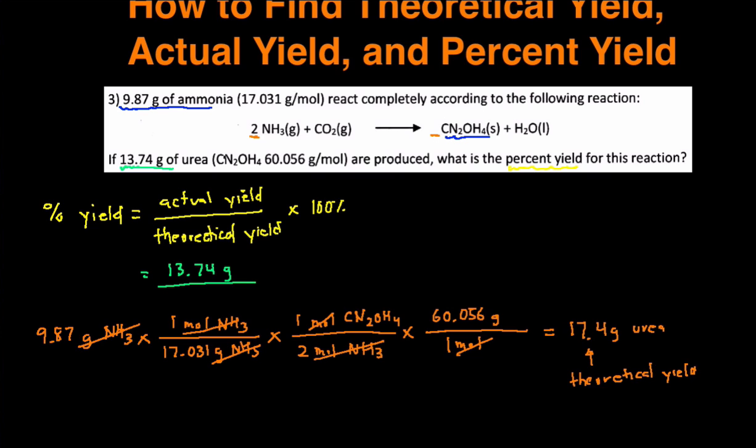Now I'm going to take that theoretical yield and I'm going to substitute it in here. So I'm going to plug in 17.4 grams for the theoretical yield, multiply it by 100%, and that gives me 79.0%. So that is my percent yield.